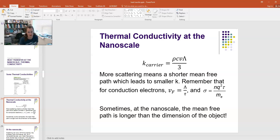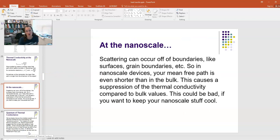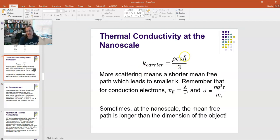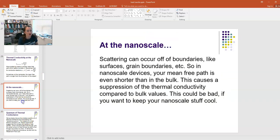But sometimes, at the nanoscale, the mean free path that you would measure in the bulk is actually larger than the dimension of the object. Why would that be? Scattering can occur off of boundaries, like the surface of a nanoparticle, or grain boundaries. In nanoscale devices, sometimes your mean free path can be even shorter than it would be in the bulk, because the dimensions of the particle or the film are actually smaller than the bulk mean free path. That causes, according to this equation ρcvλ/3, if lambda is smaller, then your thermal conductivity will also be smaller. So it's a suppression of the thermal conductivity compared to the bulk values.